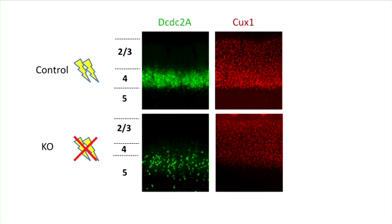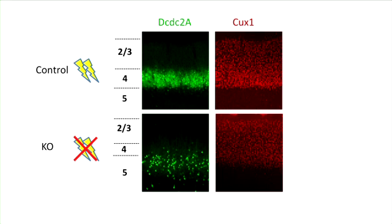Finally, gene expression changes were also observed in the absence of thalamocortical neurotransmission. For instance, the layer 4 marker dcdc2a, and cux1, a layer 4 and layer 2/3 marker, had profound shifts in their expression. Layer 4 failed to express dcdc2a, and instead layer 5 cells expressed dcdc2a, while cux1 had reduced expression in the cortex.